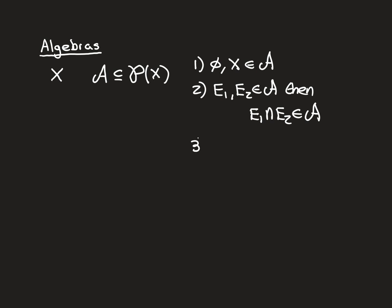Property three: if e is an element of the algebra, then e complement — meaning x subtract e — is also an element of the algebra. Remember, this is where an algebra is stronger than a semi-algebra. In a semi-algebra it just had to be that the complement was buildable out of pairwise disjoint elements of the semi-algebra, whereas for an algebra it has to be the case that the complement is actually in the algebra itself.